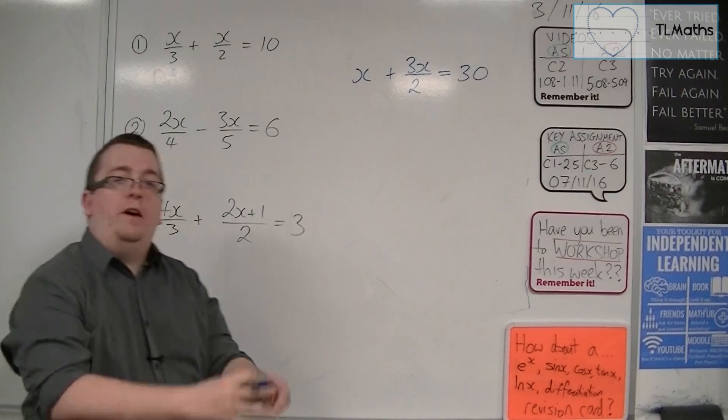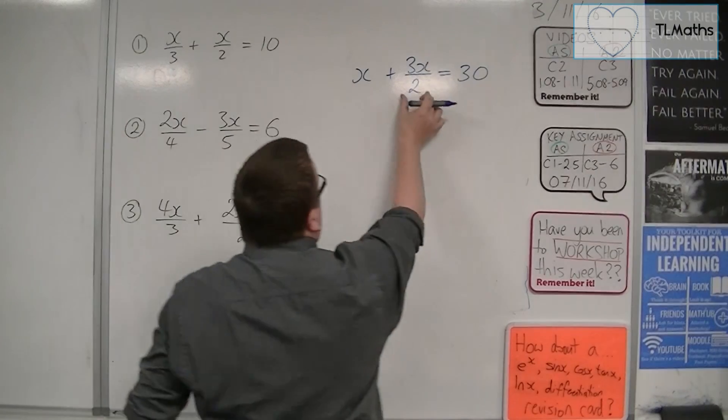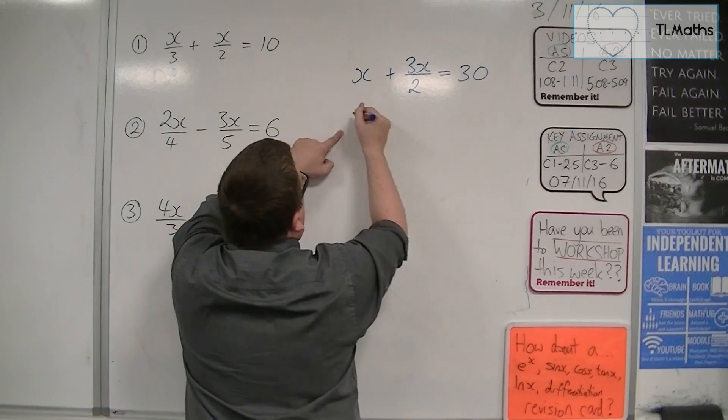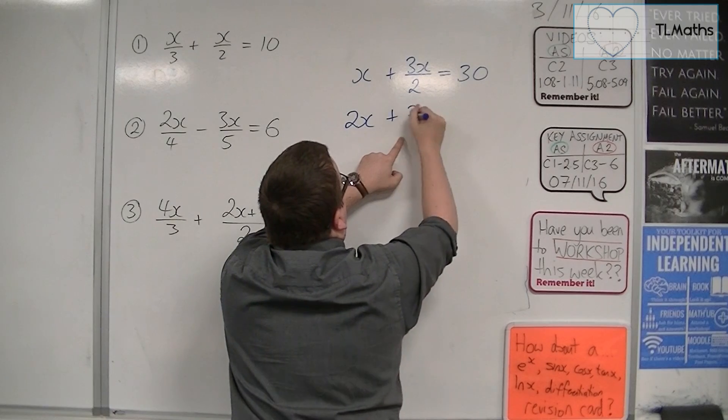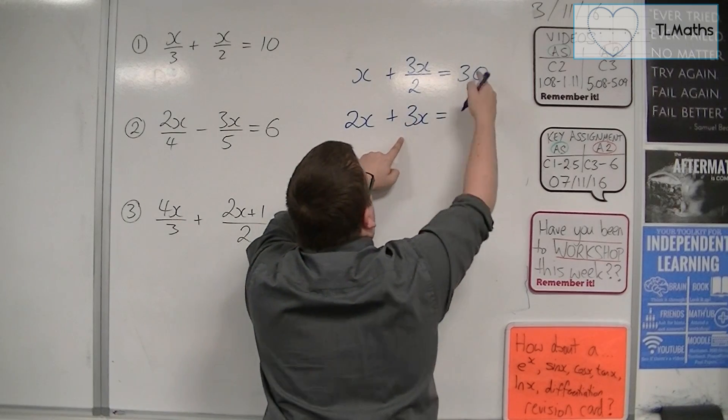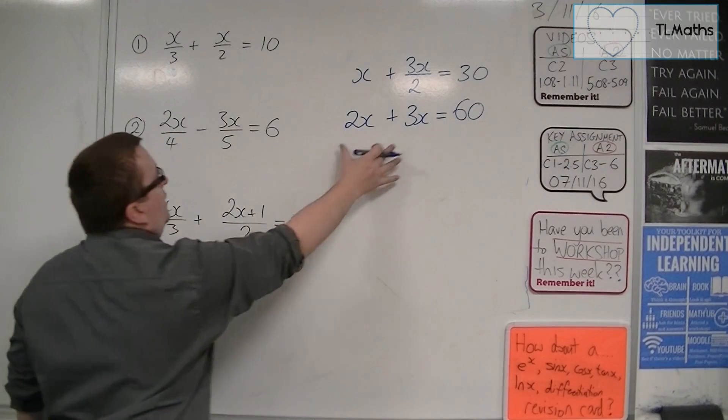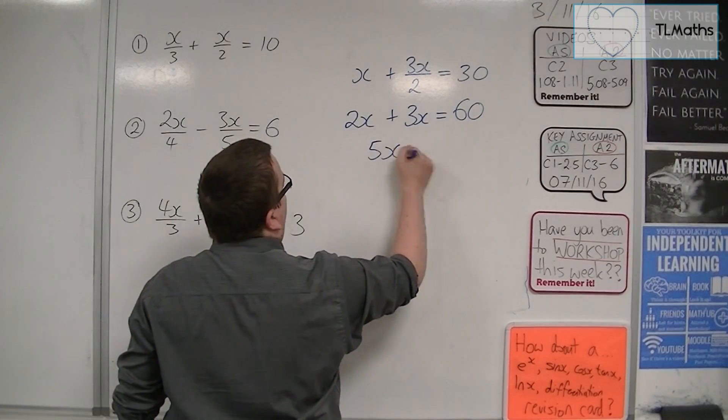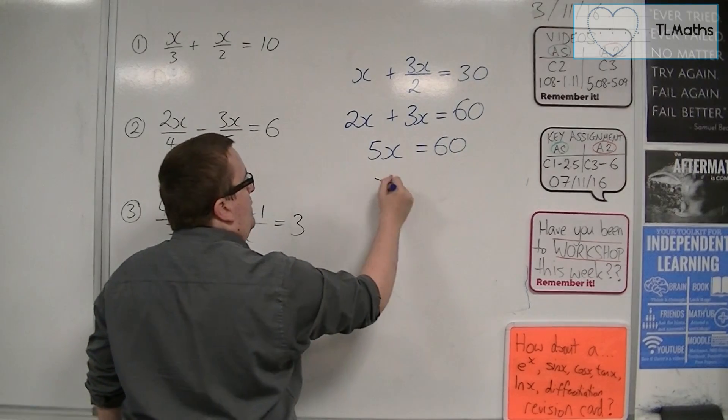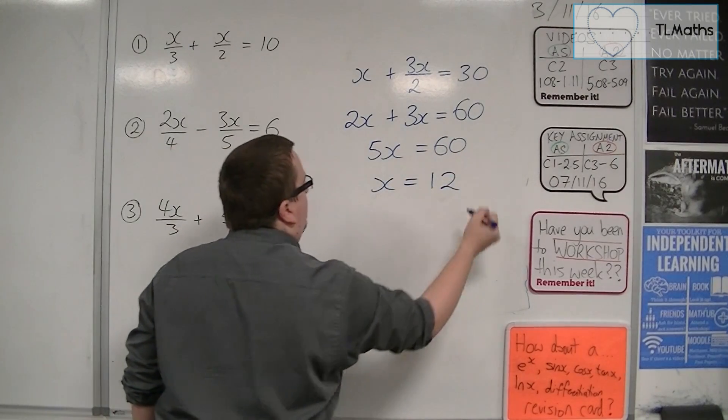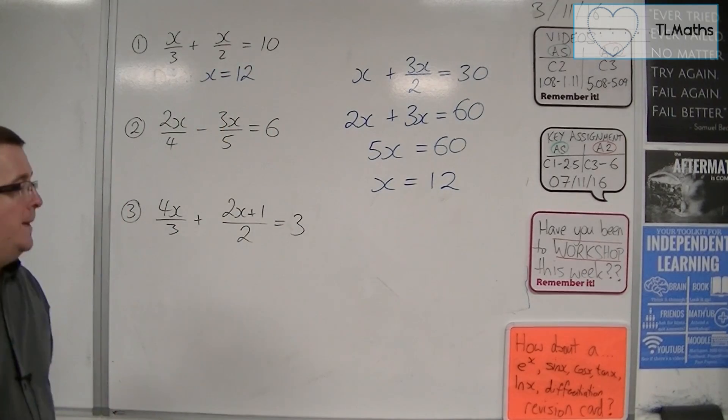So now I've got rid of one of the fractions. I now have one fraction left. I can multiply everything by 2. So 2 lots of x, 2 lots of 3x over 2 just leaves me with the 3x, and 2 lots of 30 gets me 60. So then 2x plus 3x is 5x. Then divide both sides by the 5, and we get x is 12. So x equals 12 for the first one.